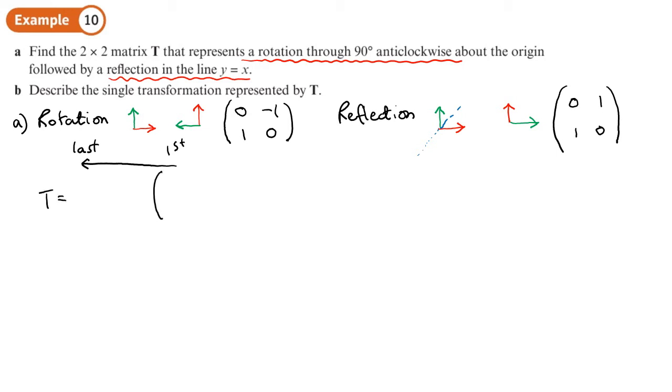So that's going to be the rotation 0, negative 1, 1, 0. And the second transformation, that's the one we write to the left first. So 0, 1, 1, 0.